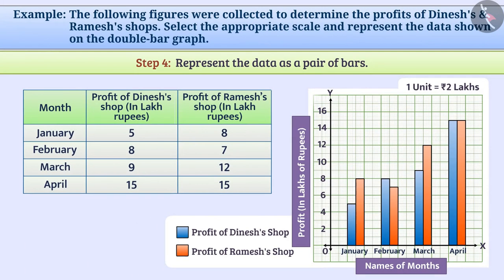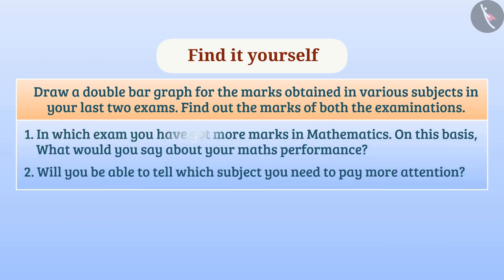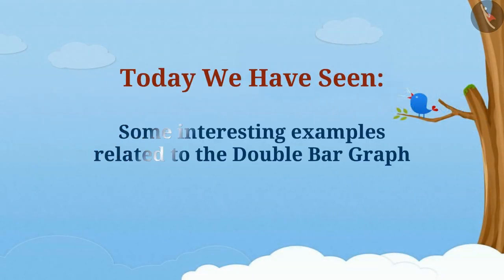In this way, we have drawn a double bar graph. Now, can you draw a double bar graph for the marks obtained in various subjects in your last two exams? Find out the marks of both examinations. In which exam did you get more marks in mathematics? On this basis, what would you say about your maths performance? Will you be able to tell which subject you need to pay more attention to? Today we have seen some interesting examples related to double bar graph. In the next video, we will see some mistakes related to double bar graph.